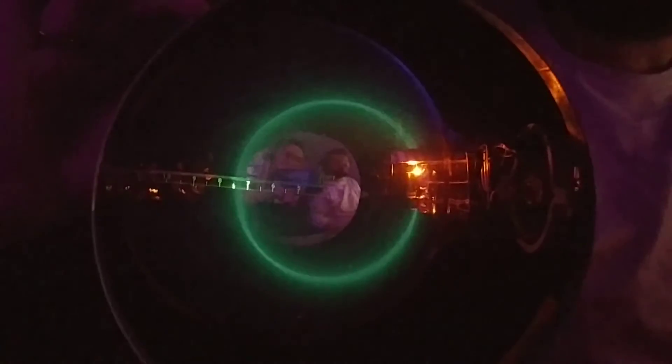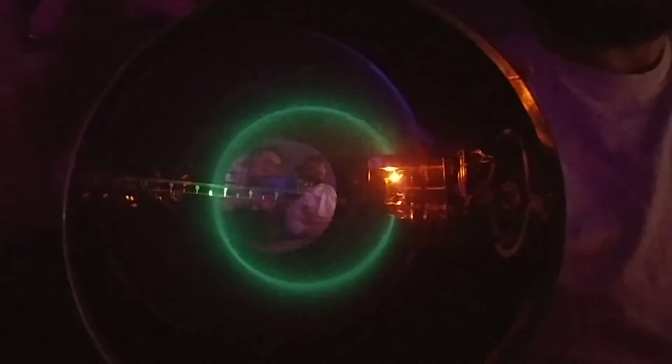As I'm increasing the current, the current is going to the Helmholtz coil. So it's increasing the strength of the magnetic field. And this magnetic field is causing the electrons to be deflected in a circular path.